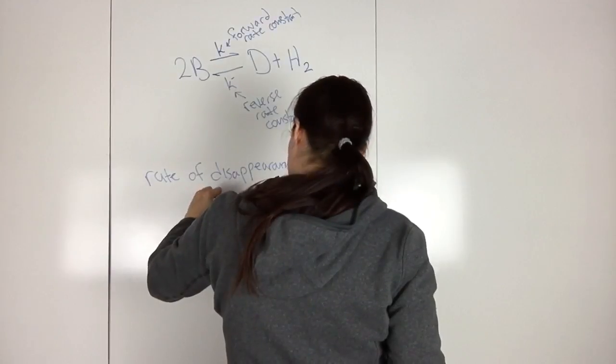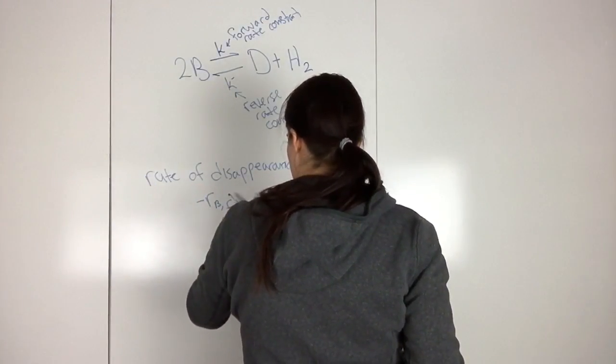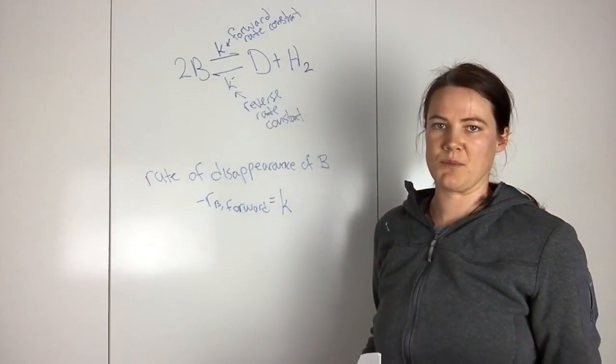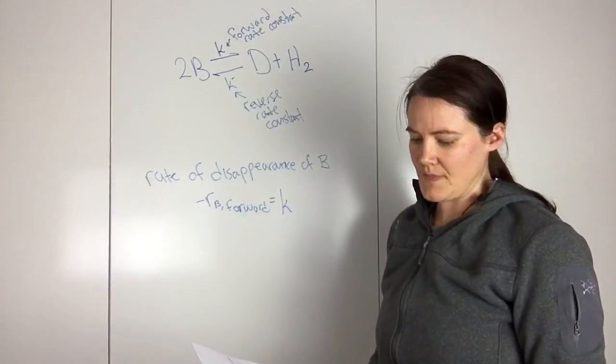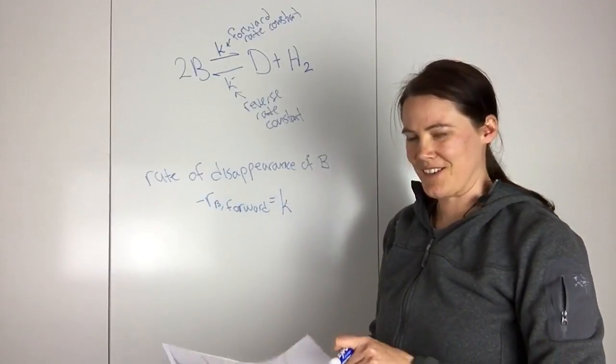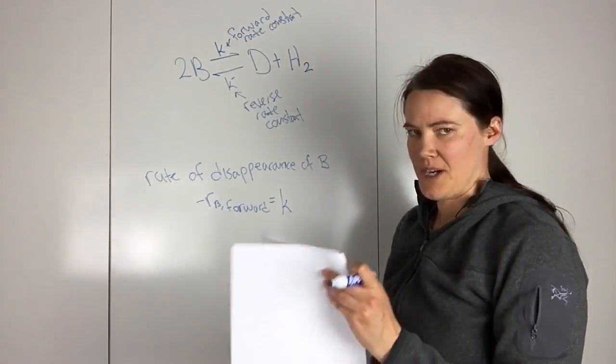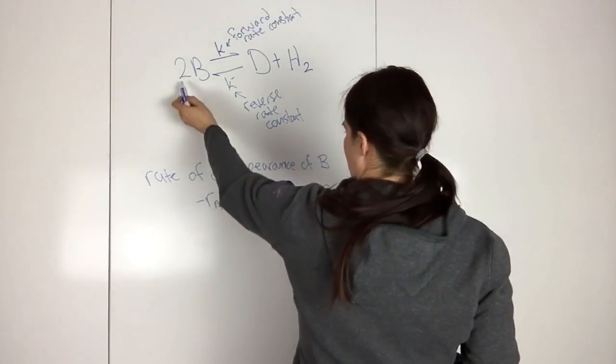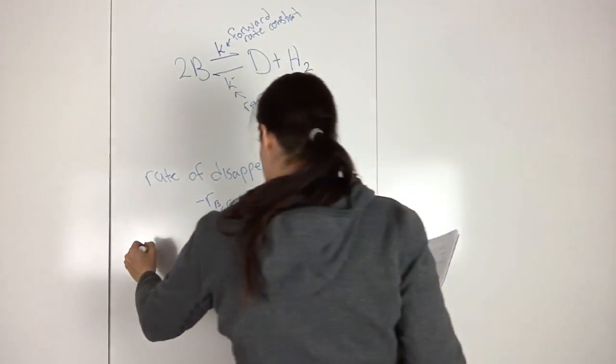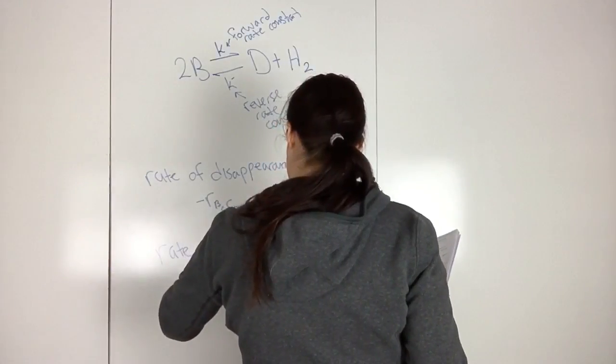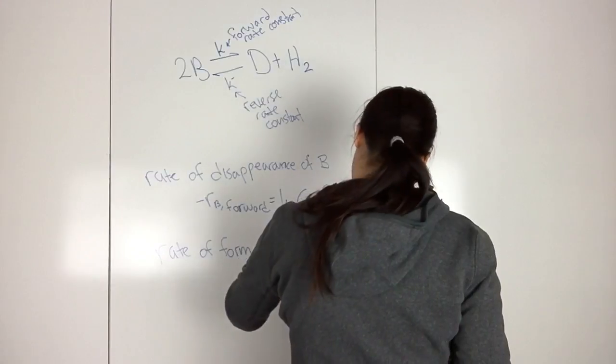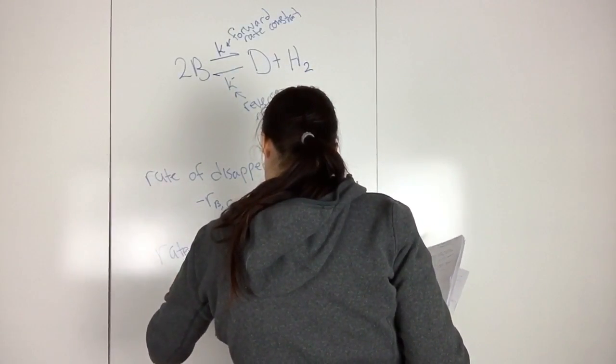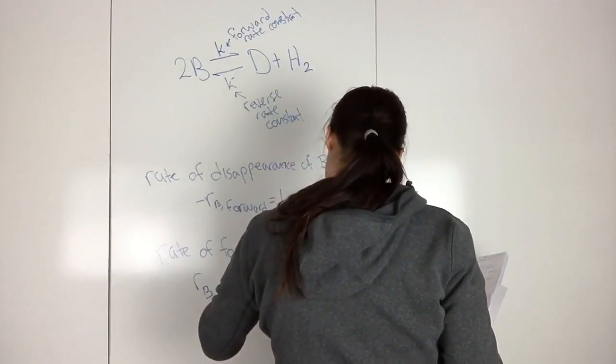So this is forward. The rate forward is equal to, assuming what I talked about in the previous video about the elementary rate laws and the power law models, assuming that this follows that, then you would get KB CB squared, because you have 2B here. And so then the rate of formation of B, because you're going the opposite direction now, so you're forming B...